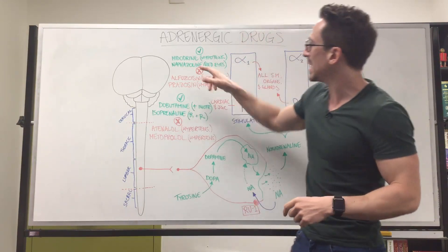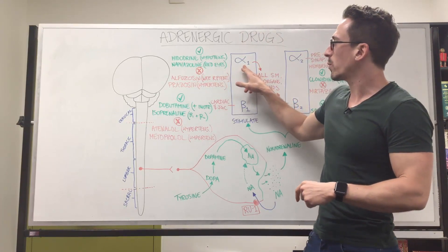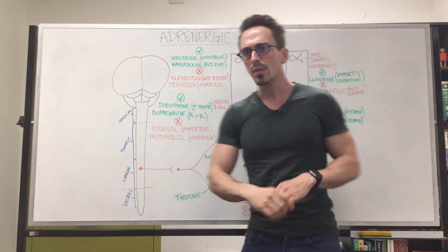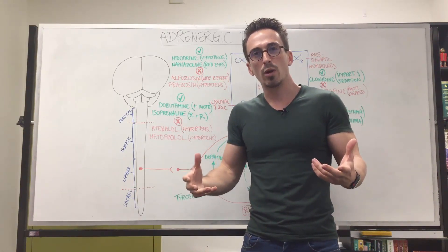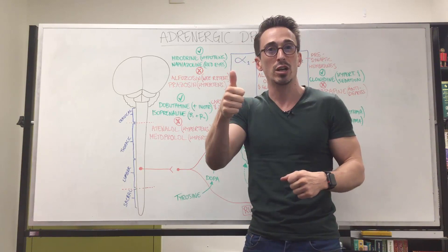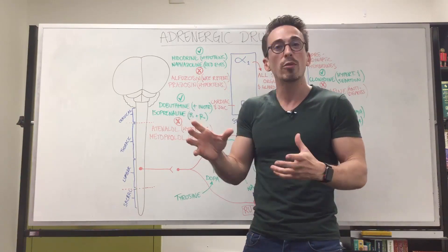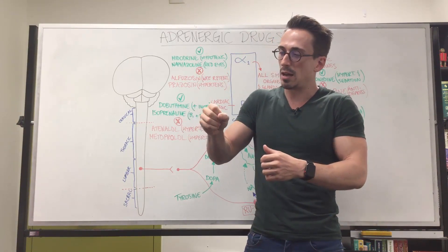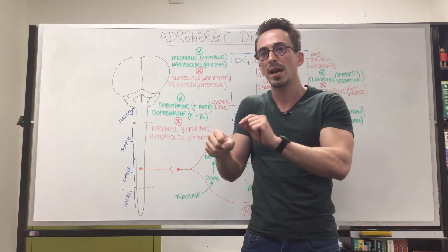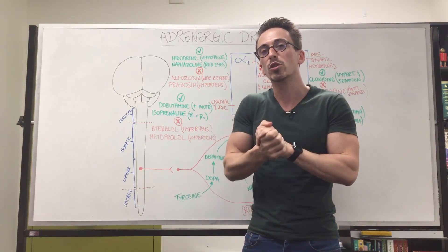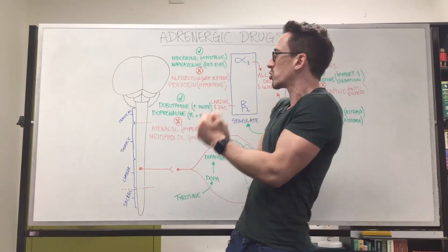Now sometimes we need to inhibit alpha-1. Why would we want to inhibit alpha-1? Well, maybe alpha-1's been stimulated too much normally. If that's the case, remember what can happen is we may have high blood pressure. We may have urinary retention because the smooth muscles in our urinary system are constricted, not letting urine come out. The bowels may be moving too slowly because the smooth muscle is constricted.